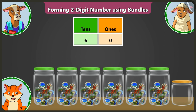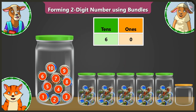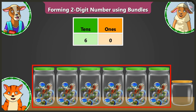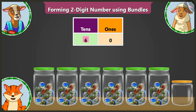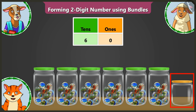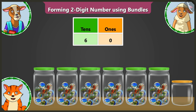Understood, children? A group of 10 objects is called 1 group of 10s. Similarly, whatever is the number of groups you have, you write that number in the 10s box. And when there is not even 1 object remaining, you write 0 in the 1s box. We understood.